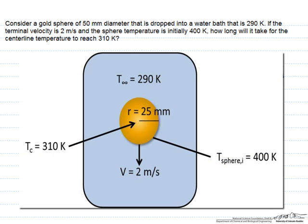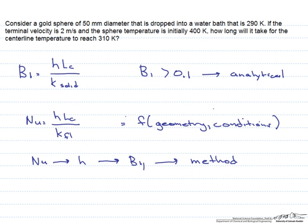Here we have a gold sphere with a 50mm diameter dropped into a water bath. We have an initial sphere temperature as well as a centerline temperature expected to be 310 Kelvin. Any time you see the word 'initially' or the expression 'how long,' you can assume that it is a transient problem.